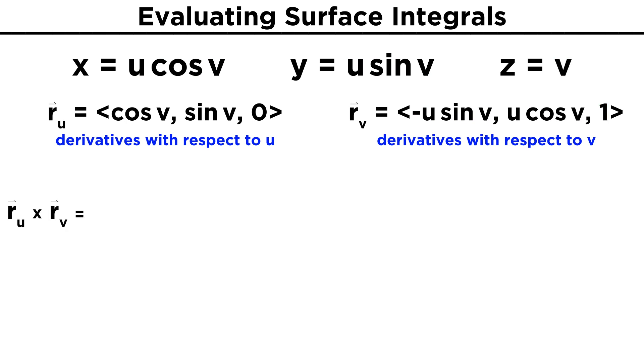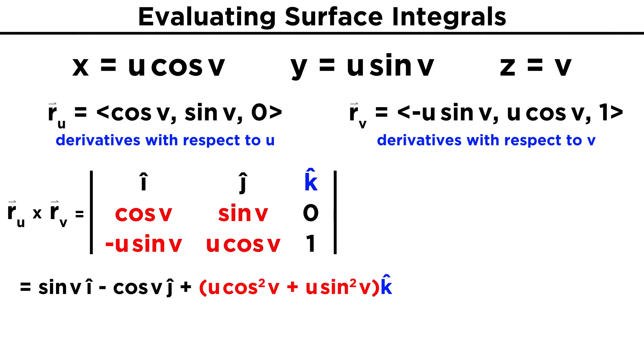Now we must take the cross product given by R U cross R V. To find the cross product, we set up the matrix shown here, and take the determinant. We end up getting sine V I minus cosine V J plus U cosine squared V plus U sine squared V K. And since cosine squared V plus sine squared V equals one, we end up with the vector sine V, negative cosine V, U.